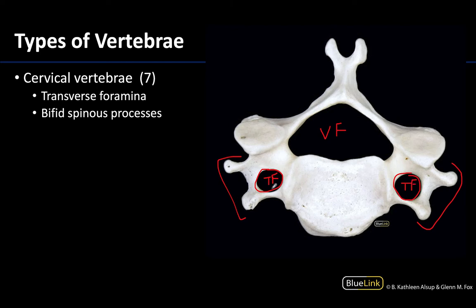Only cervical vertebrae have these transverse foramina. Additionally, both the transverse processes and the spinous processes can be bifid, meaning they split into two projections. Not all cervical vertebrae will have this and there's some variability between individuals, but this is something you do often see associated with cervical vertebrae — though you always have the transverse foramina.